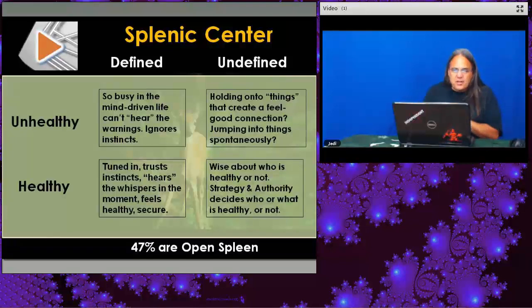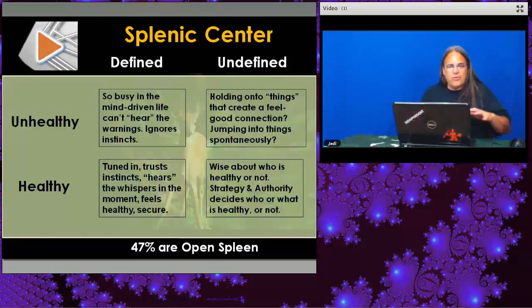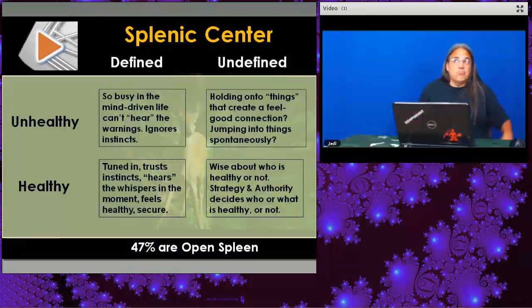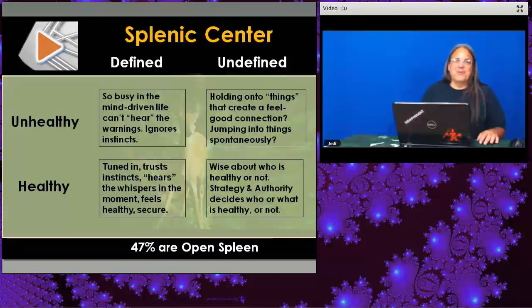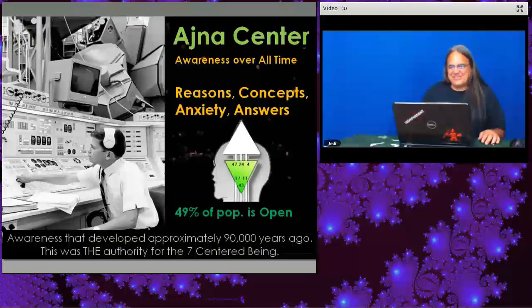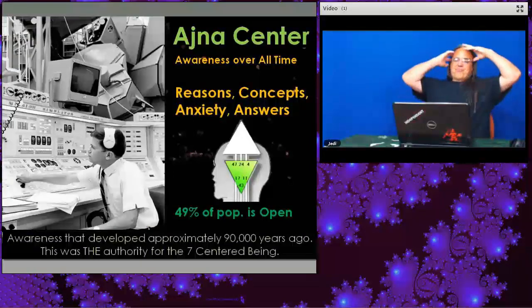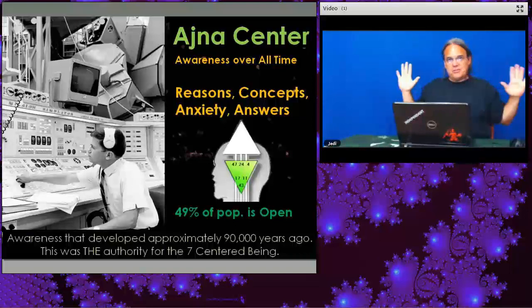Through strategy and authority, through going to what's correct, your body draws the right people into your life. I continue to do right action — that's the simplest way of saying it — and life continues to unfold in very mysterious ways. That level of trust takes some time. For now, just watch. You can be wise about what's healthy and what's not. The healthy undefined spleen — being able to step into someone's aura and know what's physically off with them is a superpower you might develop over time. But first you have to overcome your fears and stop listening to your mind.